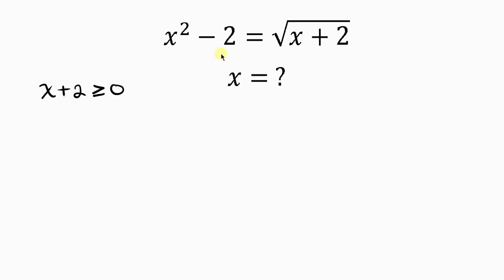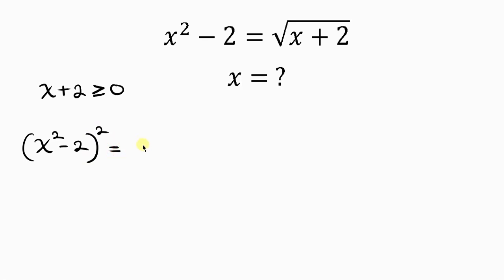Our first step towards solving this question will be for us to take the square of both sides in order to get rid of the square roots. So we have x squared minus 2 — we're going to be taking the square of the left-hand side. This is equal to the square root of x plus 2 on the right-hand side — we're also going to be taking the square of the right-hand side.